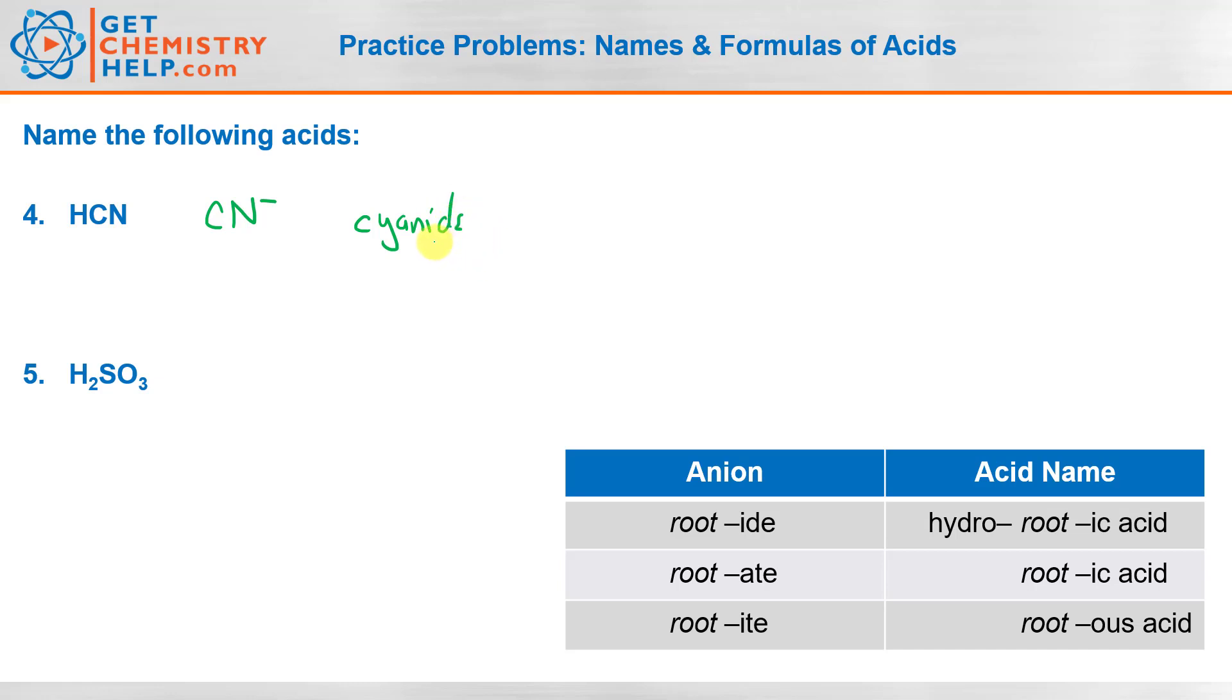So if the anion ends in ide, what do we do? Well, we can look down here and we see that we put hydro on the front and ic acid on the end.